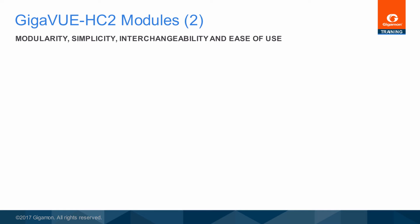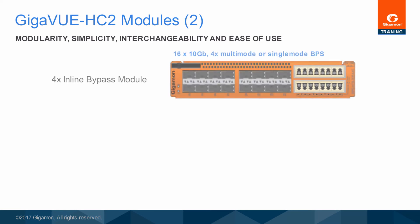There are three inline bypass switch modules supporting 1 or 10 gigabit multimode or single-mode inline bypass links. Each module has eight protected inline bypass ports providing fail-safe support for four inline links, plus 16 additional 1 gigabit SFP or 10 gigabit SFP-plus ports for unrestricted monitoring, tool, logical inline bypass, or stacking use.